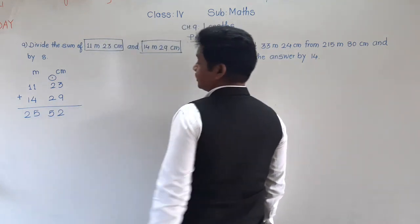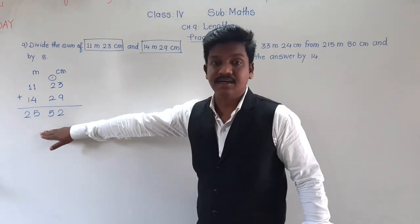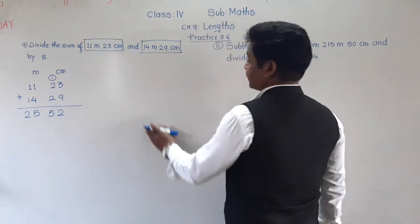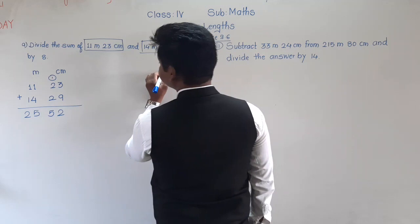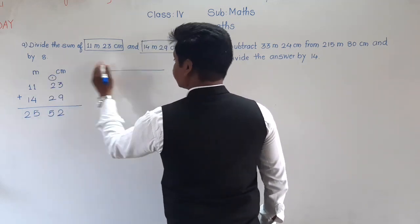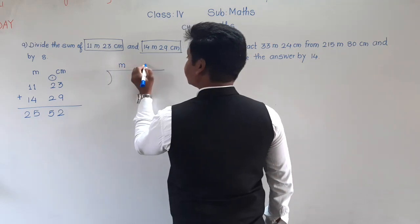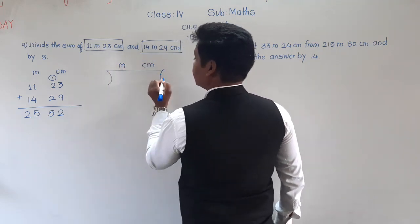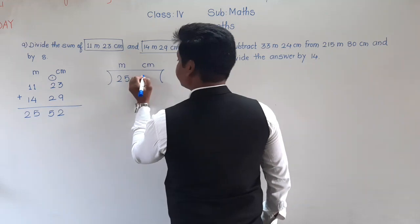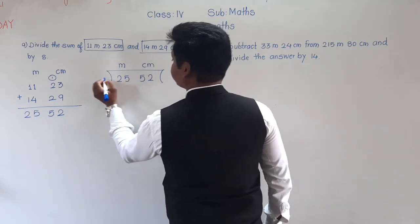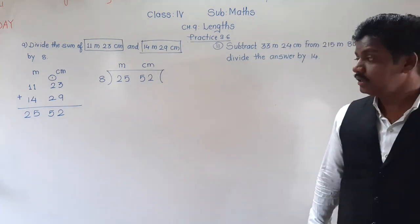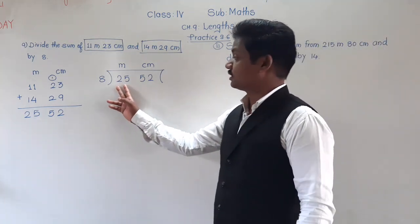The sum is 25 meter 52 centimeter. Now we have to divide this sum by 8. So we write: 25 meter 52 centimeter divided by 8.